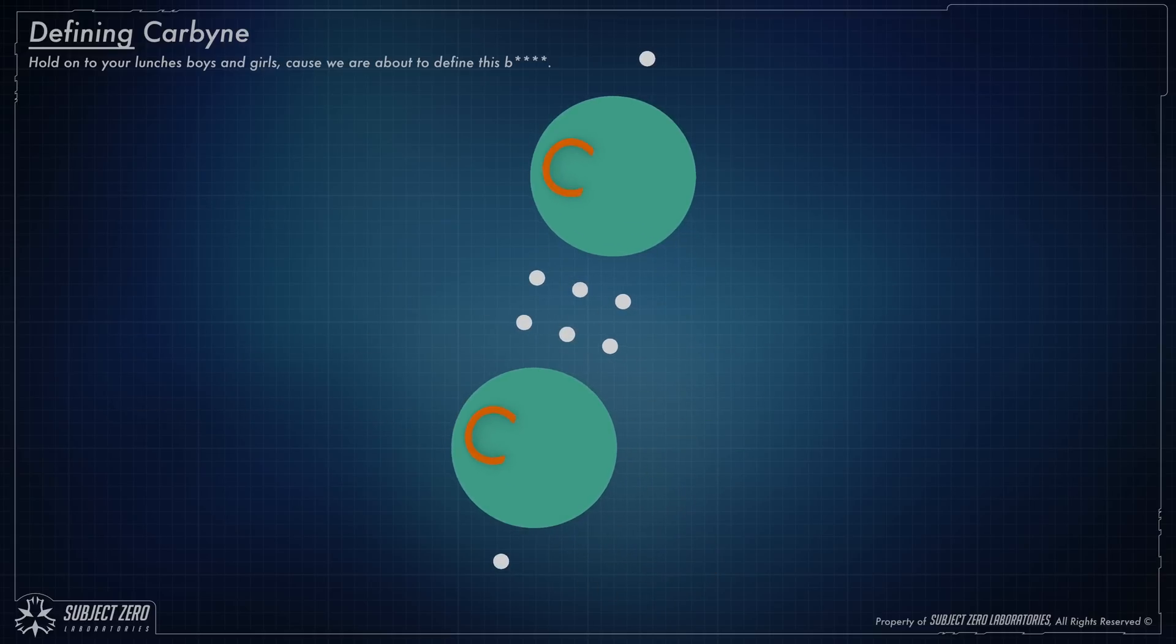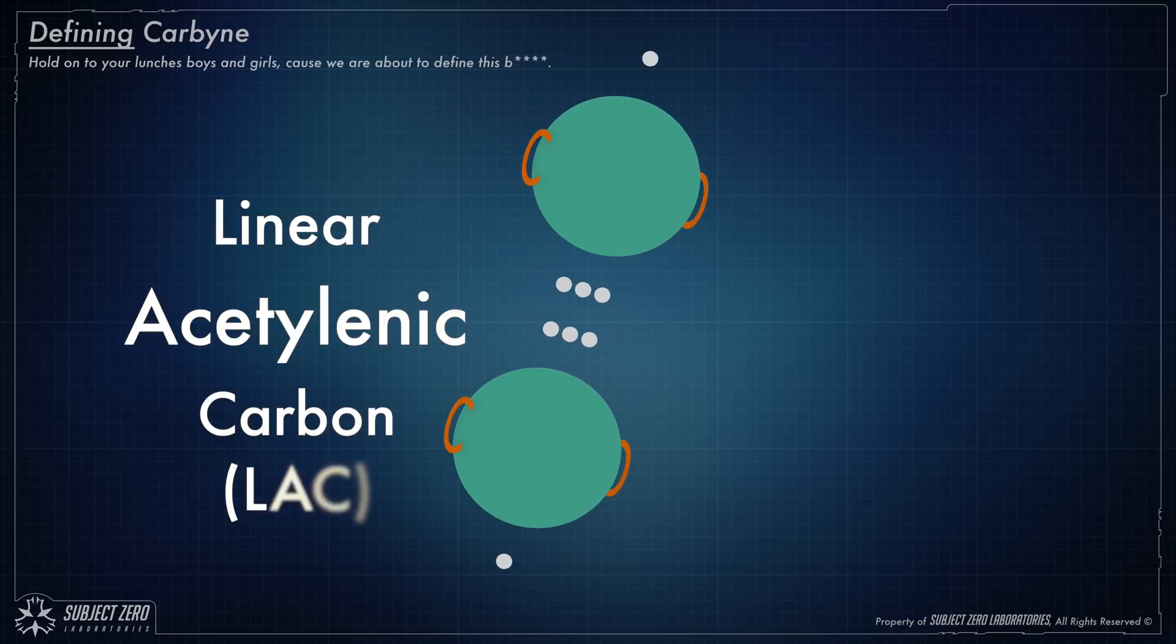And in this case, we will talk about something that was theorized back in the 1800s, but only recently achieved in the lab. The right name is linear acetylenic carbon, LAC for short.